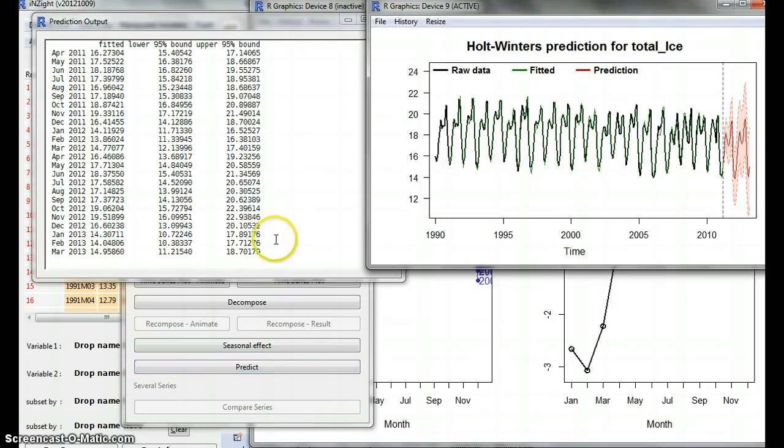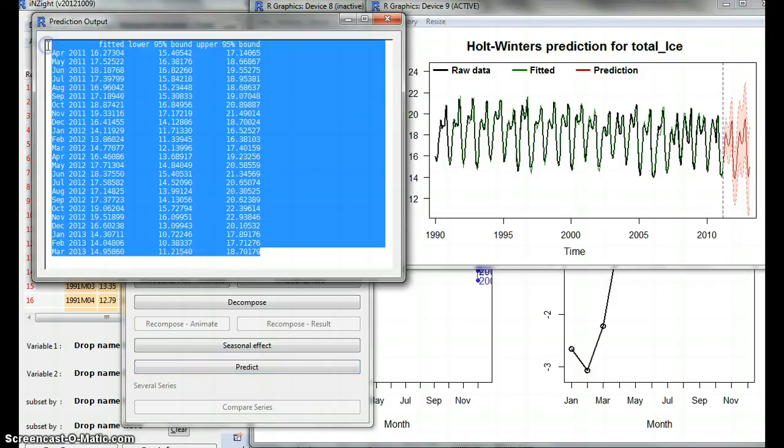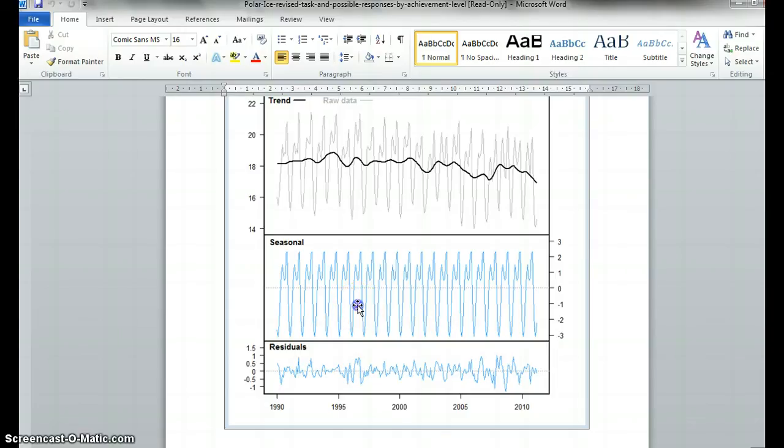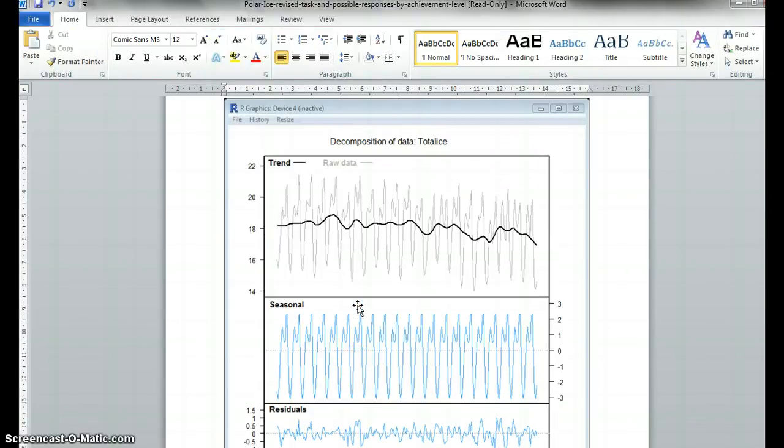And there's your values. And these values, these predictions, you can just control C them and control V them into your Word document. And these, I wonder if we copy as bitmap and we go into a Word document and we control V. It's just there. So, no problems guys. We're good to go.